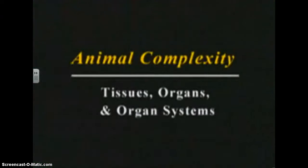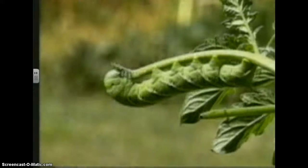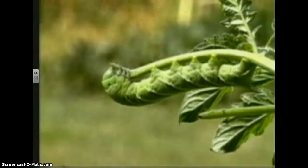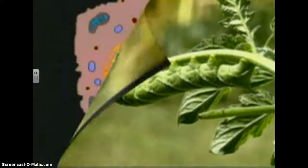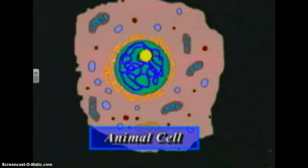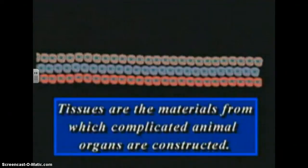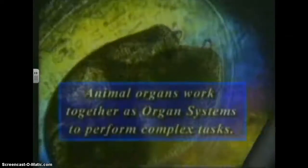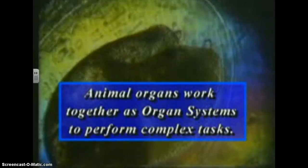The main reason animals are such complex creatures is that they can be composed of hundreds of types of cells, from which many highly organized structures are formed. The specialized cells of animals are almost always found grouped together in organized layers called tissues. Tissues are the materials from which complicated animal organs are constructed, and animal organs work together as organ systems to perform complex tasks, such as making and circulating blood and digesting food.